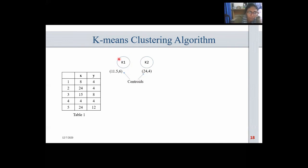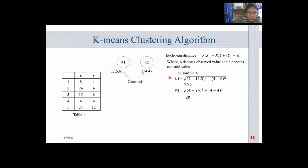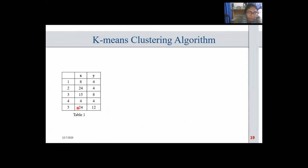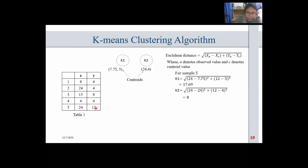For sample 4, the distances are 7.76 and 20 — since 7.76 is the minimum, sample 4 joins cluster 1. The centroid of k1 is updated again; k2 remains unchanged. For sample 5 (value 24.12), the distances are 17.69 for k1 and 8 for k2 — since 8 is the minimum, sample 5 is clustered with sample 2. The resulting clusters are k1 = {1, 3, 4} and k2 = {2, 5}.